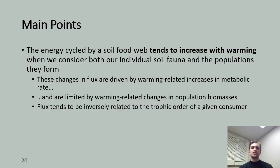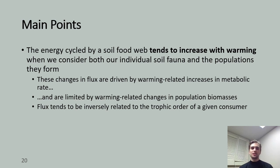To wrap things up with a few takeaways: we saw that in our soil food web communities, carbon cycling tends to increase under warming. This observation is consistent with previous research suggesting warming-related shifts in peatland vegetative communities are associated with reduced carbon sequestration. We also saw that changes in carbon cycling tend to be driven by warming-related increases in the metabolic rate of individuals, and that these changes in flux tend to be limited by warming-related changes in population biomass. These observations are consistent with the MTE and our predictions. Finally, flux tends to be inversely related to the trophic order of a given consumer. Given the large amount of carbon sequestered in boreal peatland soils, it is important to consider these systems as we continue to implement sustainable soil management strategies, as all of these findings are consistent with the idea that carbon sequestration decreases in boreal peatlands under warming conditions.